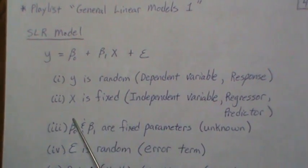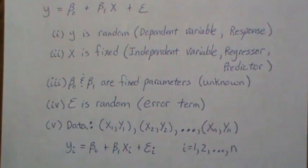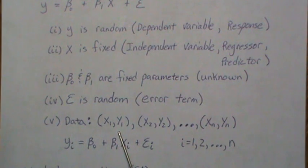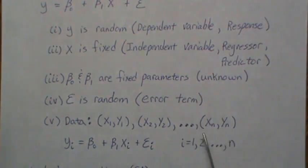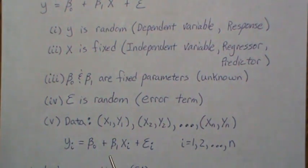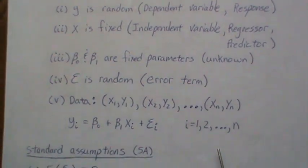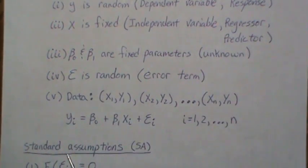You can think of x and y as following a generally linear relationship, but with some error around the line — that's what epsilon represents. Our data comes in pairs of x's and y's, a sample of size n. For each pair we assume y_i equals beta-0 plus beta-1 x_i plus epsilon_i.